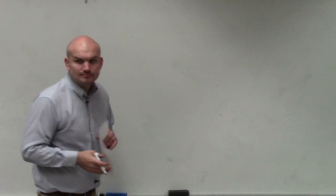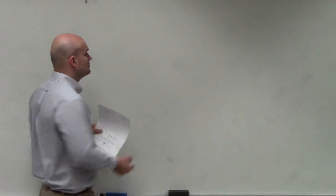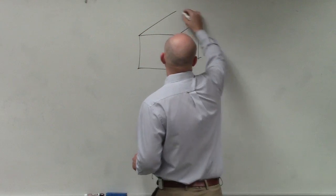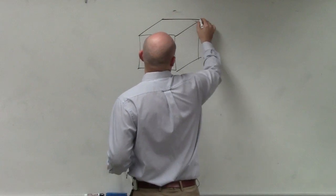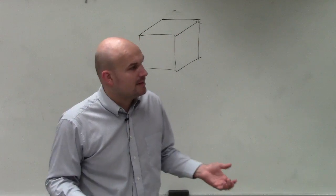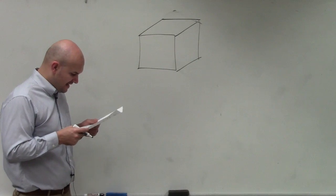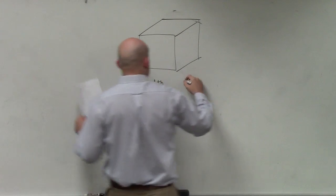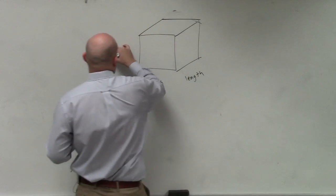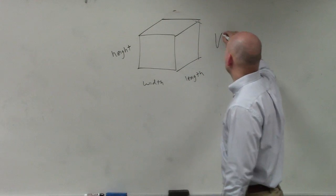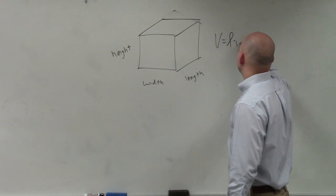Assume that the height is greater than the width. In geometry, you guys hopefully learned how to draw some prisms. Now remember, the volume is basically going to represent the space inside that box. They're telling us that the length of the safe — it doesn't really matter, you can say this is the width, this is the length, and this is the height. We know that volume equals length times width times height.